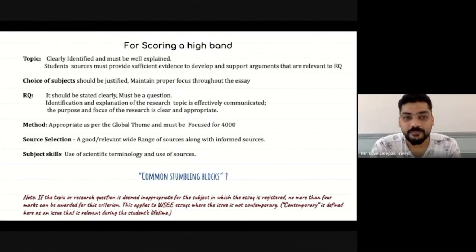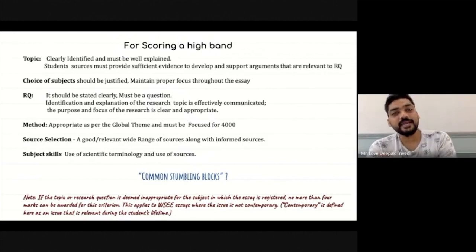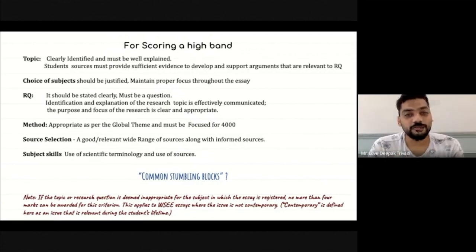For scoring a higher band, when you are choosing a topic, students should clearly identify the topic that he or she has chosen and it should be well explained. Students should provide sufficient evidence to develop arguments relevant to RQ. It should not be just like I have just written an RQ and there is one evidence that I have. You should have more than one evidence that supports your RQ. Choice of subject should be justified. And the focus of essay should not be lost at any particular point.